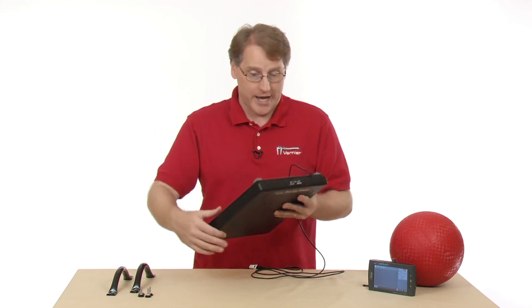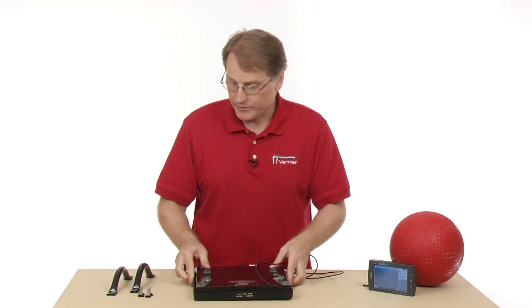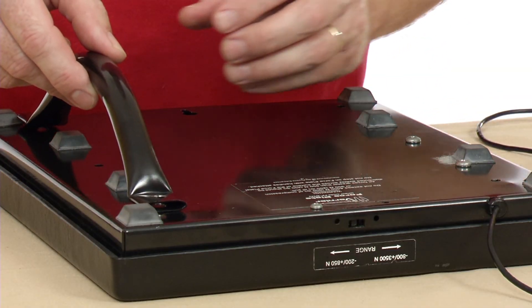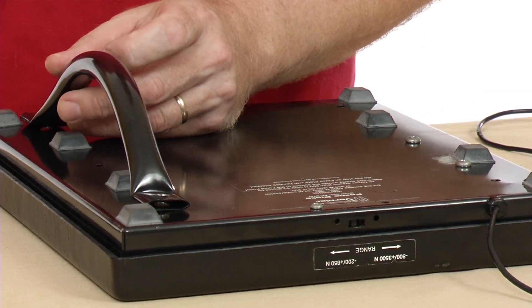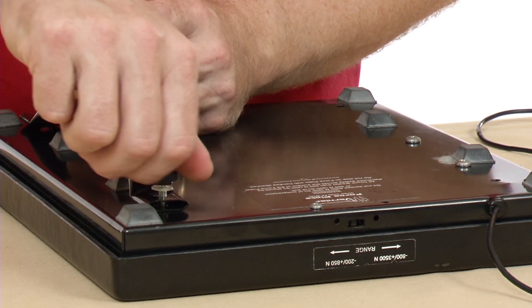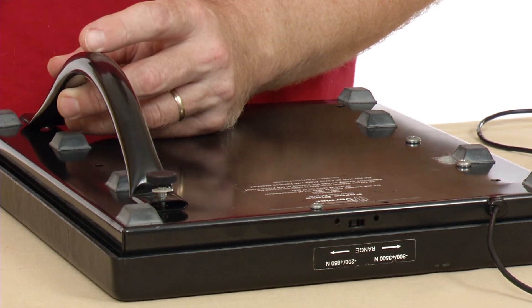To attach the handle, it's not hard to do. You take the handle, and you've got the holes here, and you can line them up with the holes. And then you take your thumb screws and you screw those into the force plate.